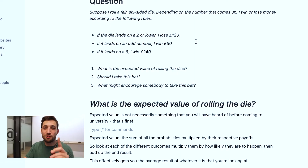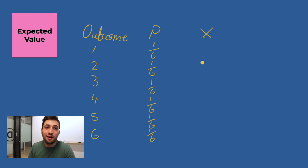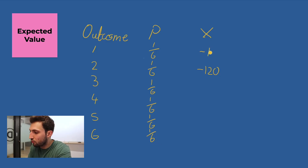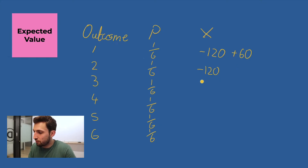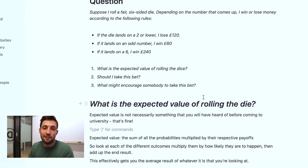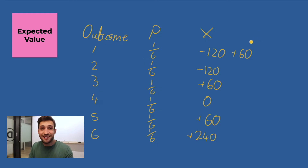Now let's work out the actual value or payoff each outcome gives us. Looking back at the question: if it lands on a two or lower, the payoff x equals minus 120 pounds. If it lands on an odd number we win 60 pounds — so that's one, three, and five. If it lands on a six we win 240 pounds. And that leaves four with a payoff of zero.